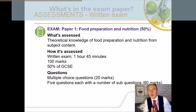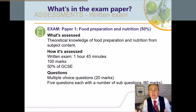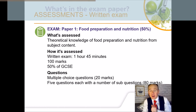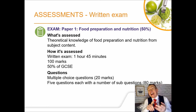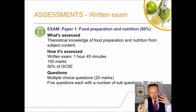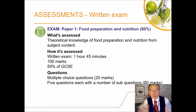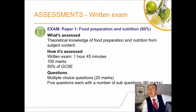Let's start with the written paper. It's a 1 hour 45 minute paper, worth 100 marks and 50% of your GCSE. For AQA, that means multiple-choice questions worth 20 marks, and five longer questions worth 80 marks, covering all the theoretical knowledge from the subject content we talked about earlier.